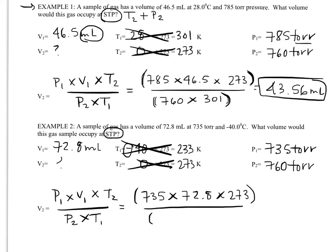Divided by P2, 760, times T1, 233. Alright, so in my calculator, I'm going to hit open parentheses, 735, times 72.8, times 273, close parentheses, divided by, open parentheses, 760, times 233, close parentheses. And that gives me 82.49, and my units are milliliters.